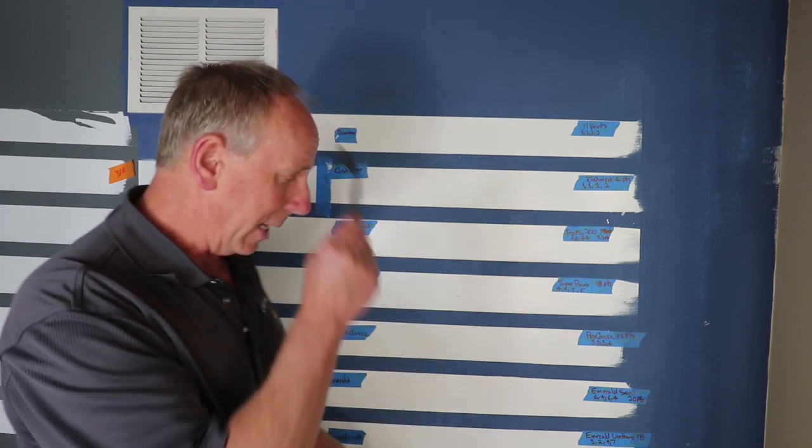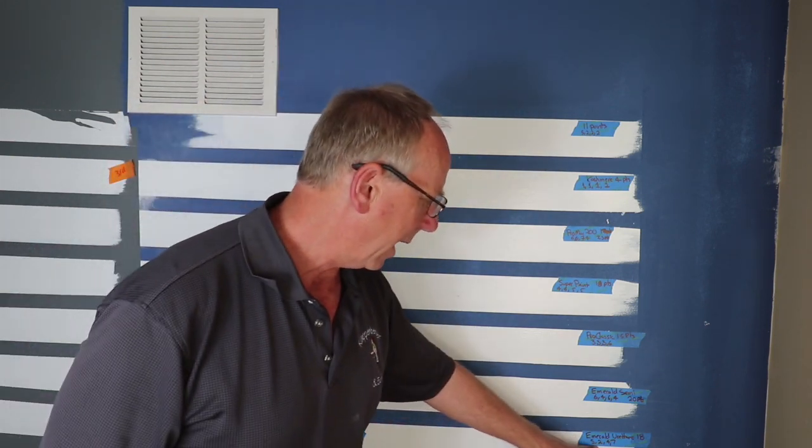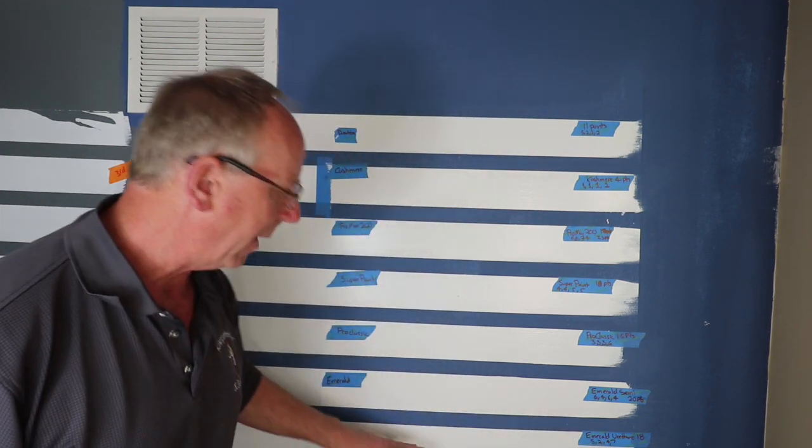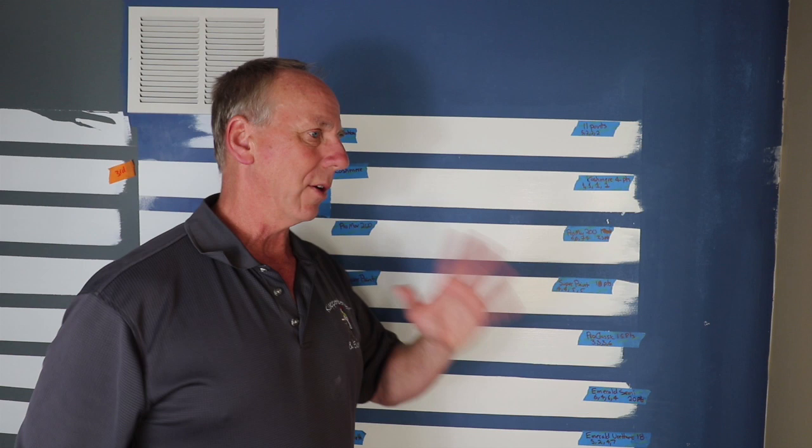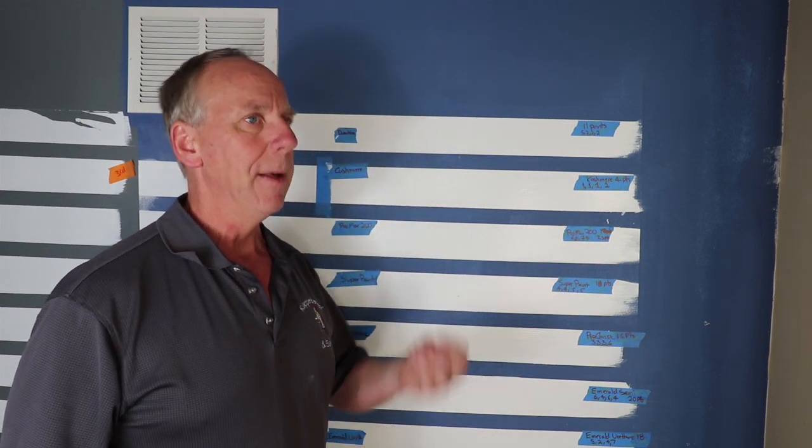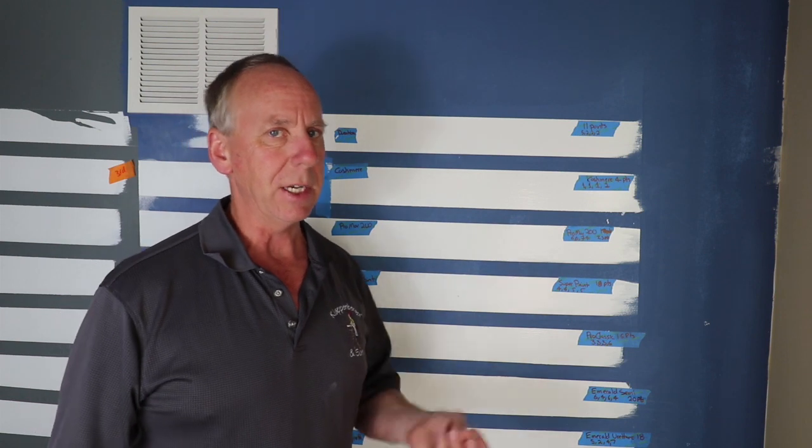And then the Emerald Urethane, talked about all over the place. It got a fifth, a second, a fourth, and a seventh, but I think it's pretty safe to say, as we look around at these other colors, that the Emerald Urethane is always finishing in the bottom of the heap. It doesn't mean it's a bad paint, it just means it's not a good covering paint.